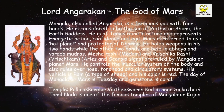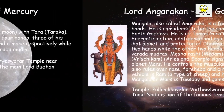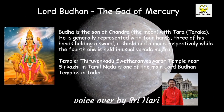Lord Angaraka, the God of Mars: Mangala is also called Angaraka. He is a ferocious god with four hands, considered to be the son of Prithvi, the Earth Goddess. He is of Tamas Guna in nature and represents energetic action, confidence and ego. Lord Budha, the God of Mercury: Budha is the son of Chandra the moon with Tara. He is generally represented with four hands, three holding a sword, a shield and a mace respectively, while the fourth is held in Varada Mudra.